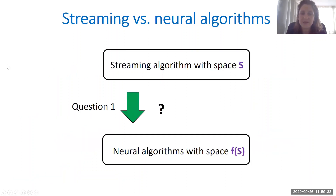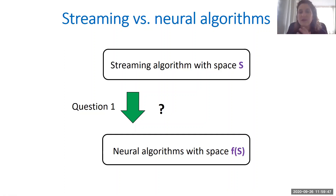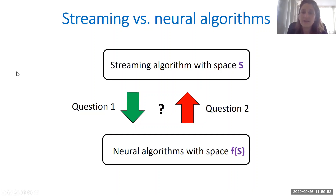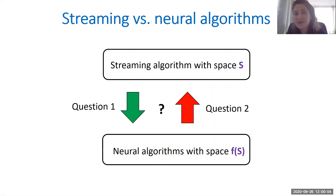The first question we asked is: can we get space upper bounds for neural algorithms from known space upper bounds for streaming algorithms? Can we convert space-efficient streaming algorithms into space-efficient neural algorithms? Then in the other direction, can we convert space-efficient neural algorithms into space-efficient streaming algorithms? And if we have a reduction in this direction, it will also allow us to convert space lower bounds for streaming algorithms into space lower bounds for neural algorithms.